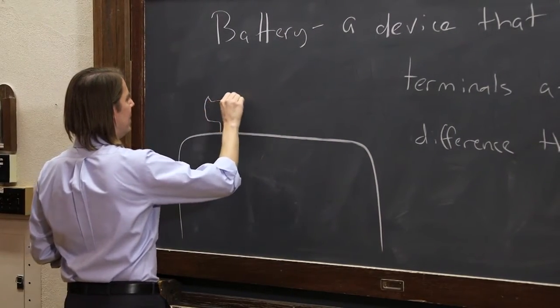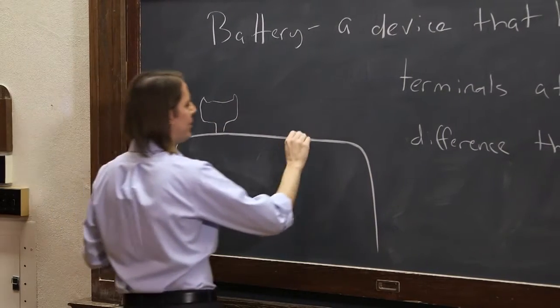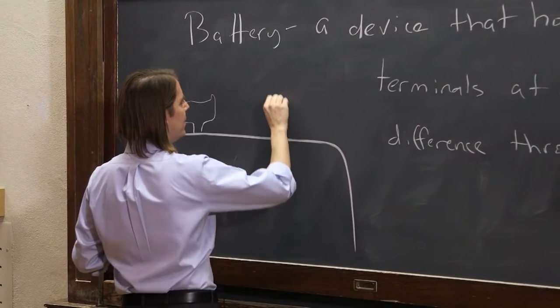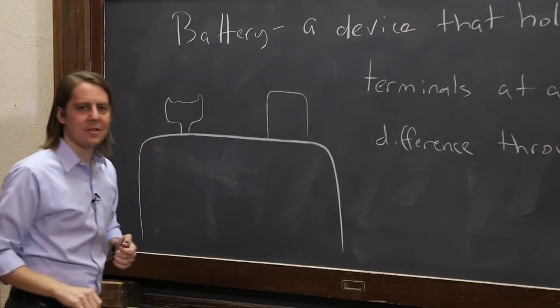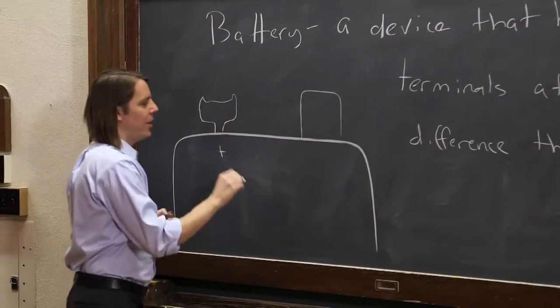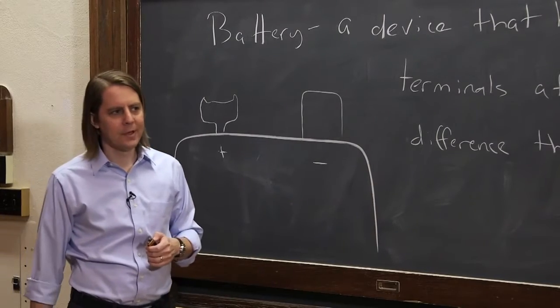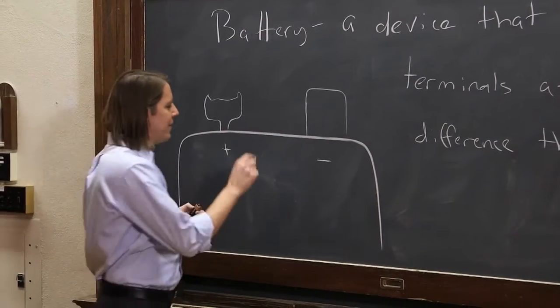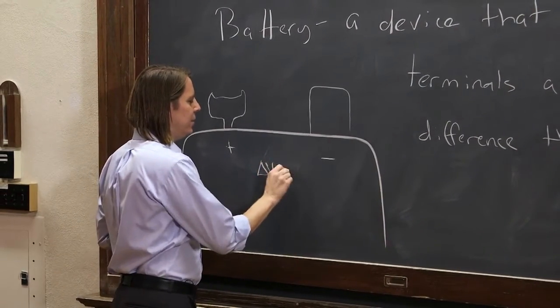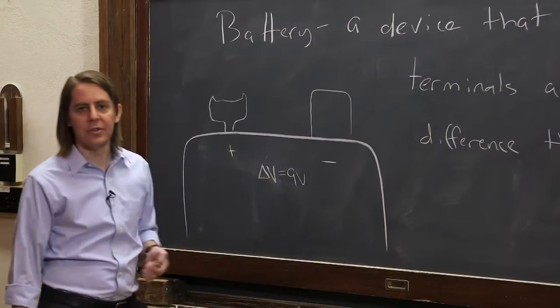So one kind of looks like this, and they're shaped different so you can tell them apart so that they can clip together. And one kind of looks like this. One is the positive terminal, one is the negative terminal. And we know that it's a 9-volt battery, so that means the potential difference it holds is 9 volts.